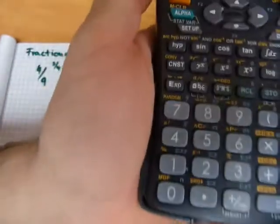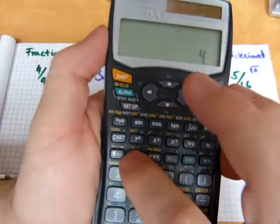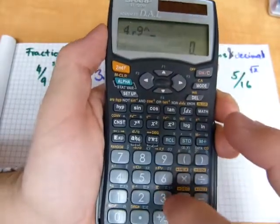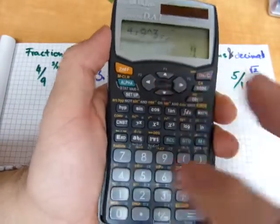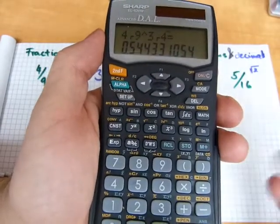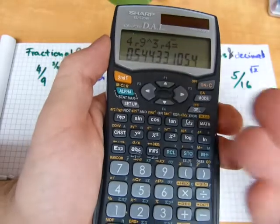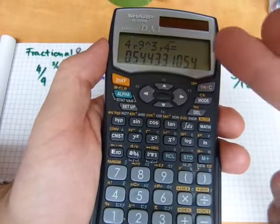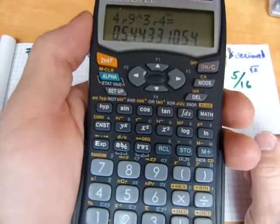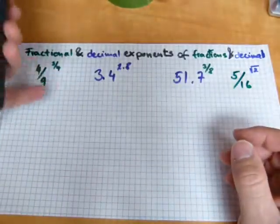So 4 ninths is 4 ABC 9, XY button to the power of 3 ABC 4 equals 0.5 something something something. So that's 4 ninths to the power of 3 quarters. So you can get a normal number or a number in standard format instead of that.